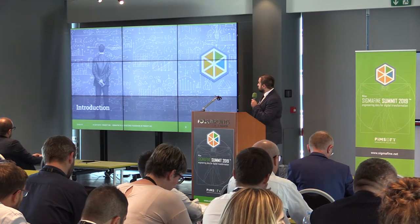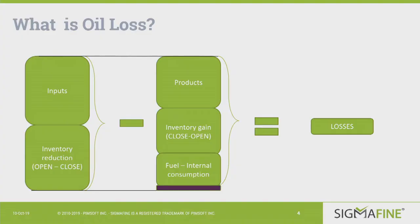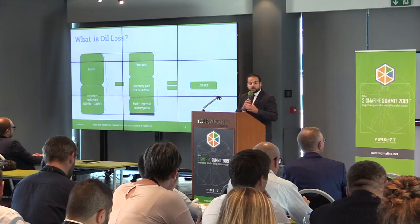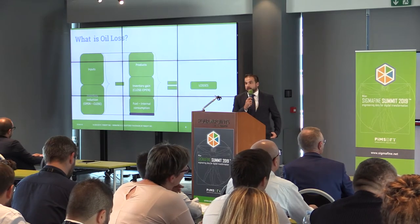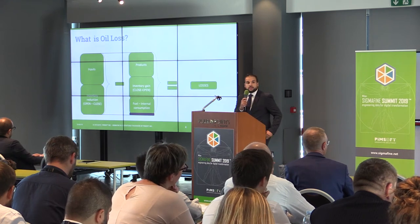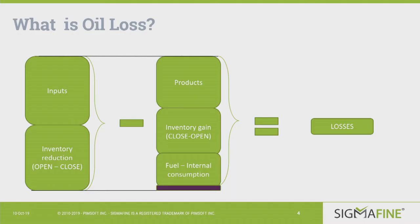The first important thing is to define what losses means. Losses are the total processed inputs minus the total products minus the total fuel. Total processed inputs are the material received and the decrease of feedstock inventory. The total products are the product delivered plus the increase of product inventory, and finally we have the total fuel used in the plant.